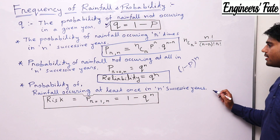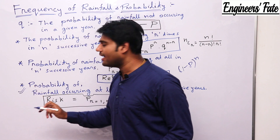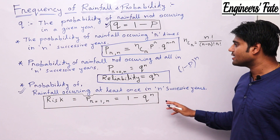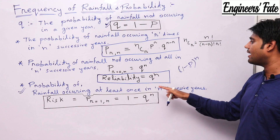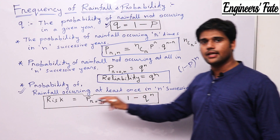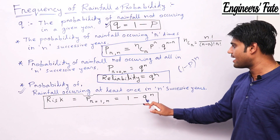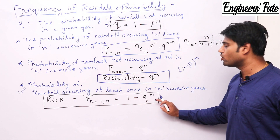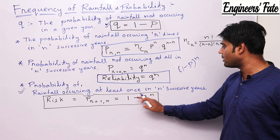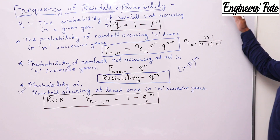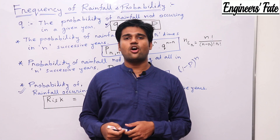The probability of rainfall occurring at least once in n successive years is a very important term asked in every exam, and it is known as risk. Risk is given as 1 minus Q to the power n. So risk equals 1 minus Q to the power n.